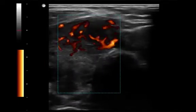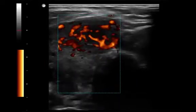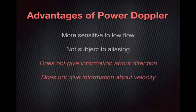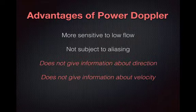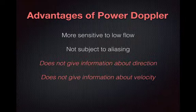Power Doppler has a few advantages. Number one, it's extremely sensitive to low flow. And secondly, it's not subject to aliasing, so it requires a little bit less fiddling on our part when scanning. There are some disadvantages: it does not give information about direction of blood flow, and it doesn't tell us anything about the velocity of the blood flow.